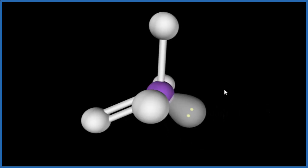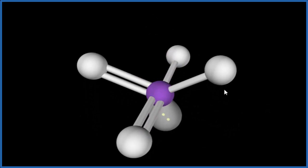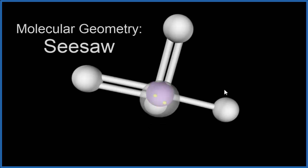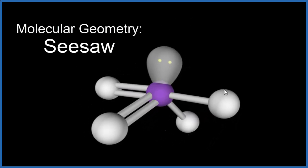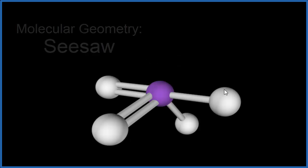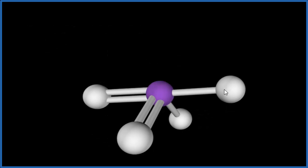So when we add the lone pair in, we end up with what's called a seesaw molecular geometry. So here's our seesaw molecular geometry. Let's turn the lone pairs off. And you can see this is the seesaw molecular geometry.